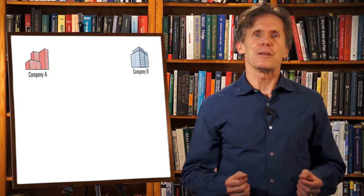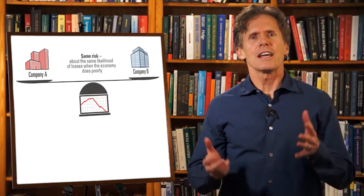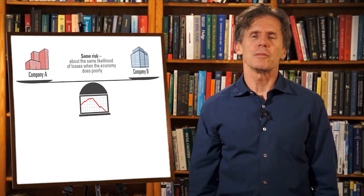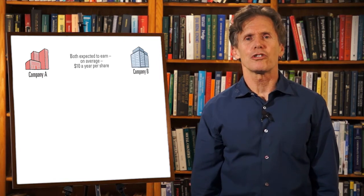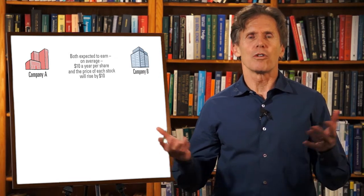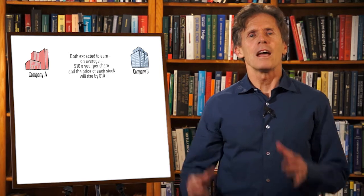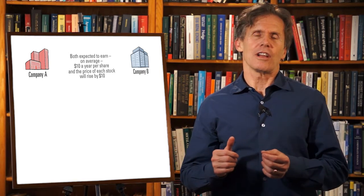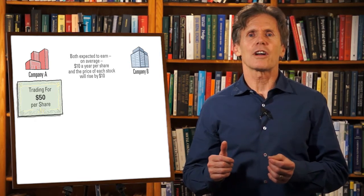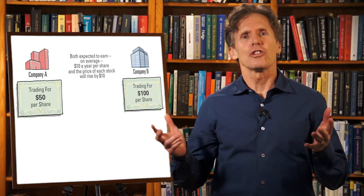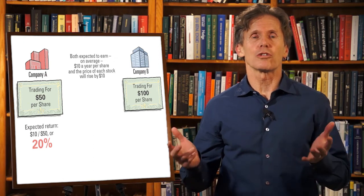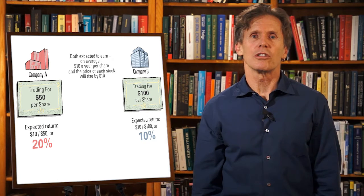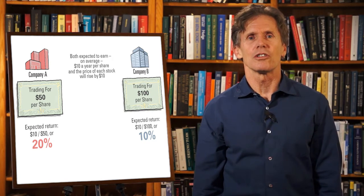Suppose that there are two investments, shares in company A and company B. Shares in both companies have the same risk. That is, about the same likelihood of losses when the economy does poorly. Let's say both companies are expected to earn, on average, $10 a year per share. And to keep things simple, that the price of each stock will rise by $10 a share. However, a share of company A's stock is trading for $50 and a share of company B for $100. So a share of A has an expected return of $10 divided by $50, which equals 20% a year. And a share of B has an expected return of $10 divided by $100, or 10% a year.